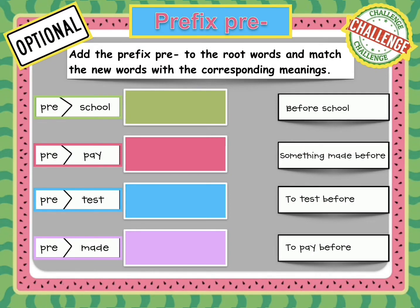And this is your challenge activity for today. You will find this slide on CISO, and it is an optional activity. You will need to add the prefix pre to the root words and match the new words with the corresponding meaning. The first question is preschool — is it before school, something made before, to test before, or to pay before? The second one is prepay. The third one is pretest. And the last one is premade. Make sure to write the new words inside each box and then match them with their meanings.